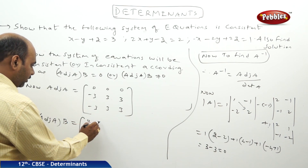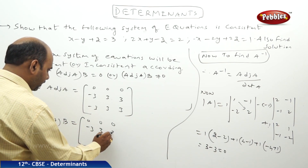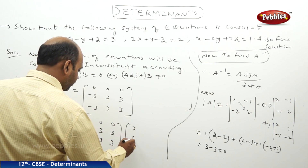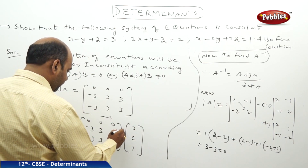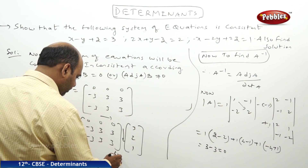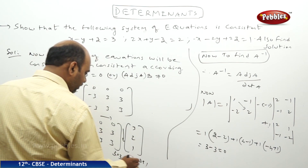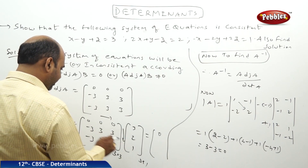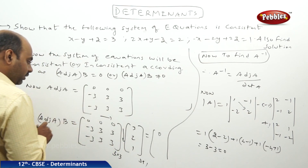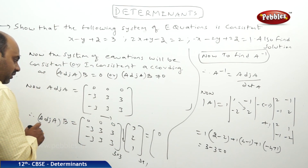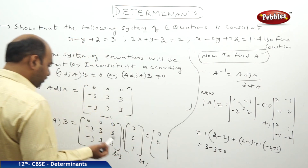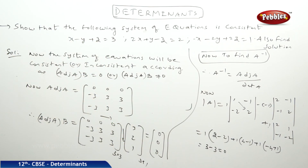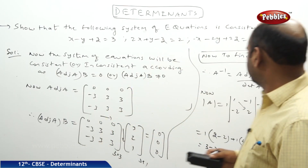Our adjoint A is the matrix: row 1 is (0, 0, 0), row 2 is (-3, 3, -3), multiplied by B which is (3, 2, 1). Matrix multiplication is possible because the number of columns in the first matrix equals the number of rows in the second. The first row will always be 0 because 0×3 + 0×2 + 0×1 = 0. For the second row: -3×3 = -9, -9 + 6 = -3, and -3 + 3 = 0. So adjoint of A into B equals 0.